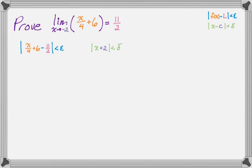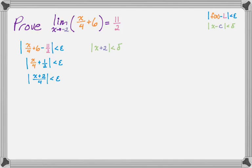My goal is to make the absolute value of x plus 2 show up from the epsilon inequality, isolate it, and then use that to figure out the relationship between delta and epsilon. So let's do a little bit of algebra on the epsilon inequality. Combining things with a common denominator will give us this, and then using properties of absolute value — the absolute value of 4 is just 4.